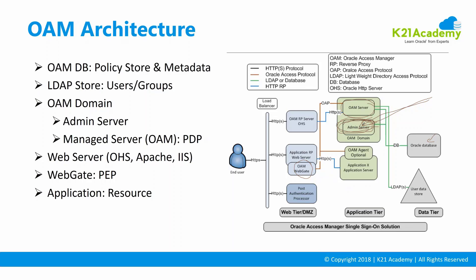There are also WebLogic Console and Enterprise Manager consoles deployed on the admin server. The admin server listens on port 7001 by default and is used only during administration — meaning if the admin server goes down, Oracle Access Manager will continue to work. The managed server, called the OAM server, listens on port 14100 by default. It also has another listener on port 5575 — 5575 is the back-end channel and 14100 is the front-end channel.